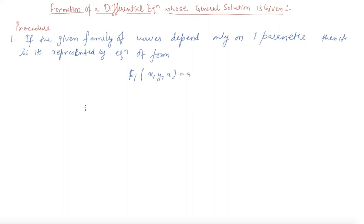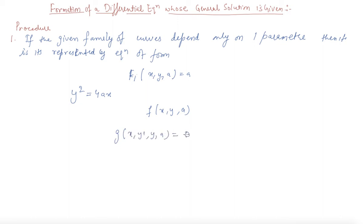For example, y² = 4ax can be represented by an equation f(x, y, a). Differentiating this equation with respect to x, we get an equation involving y' also, which will involve g(y', y, a) = 0. The required differential equation is then obtained by eliminating 'a' from both these equations.